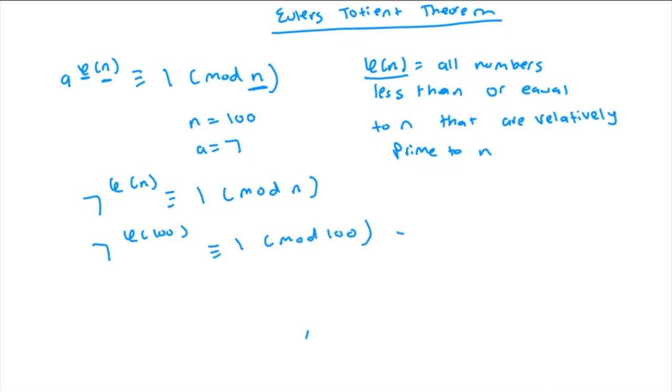And if you calculate phi of 100, which you should probably memorize if you're taking the AIME. But AMC 10 and 12, you don't really need to. I just want to briefly go over this. phi of 100 is 40. So, you have 7 to the power of 40 is congruent to 1 mod 100. And this also works for any prime,